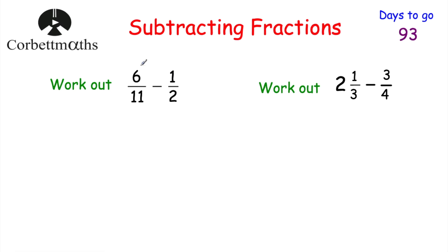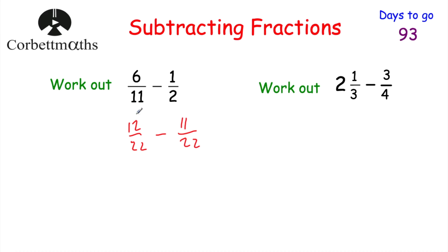Now let's look at subtracting fractions. We've got: work out six elevenths subtract a half. The first step is the same — get equivalent fractions with the same denominator — then subtract the numerators instead of adding. For six elevenths minus a half, the common denominator is 22. Six elevenths becomes 12 twenty-seconds, and a half becomes 11 twenty-seconds. 12 minus 11 is 1, so the answer is 1 over 22.